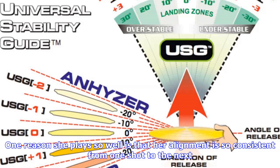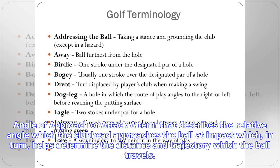Alignment: the position of the body in relation to the initial target. One reason she plays so well is that her alignment is so consistent from one shot to the next.